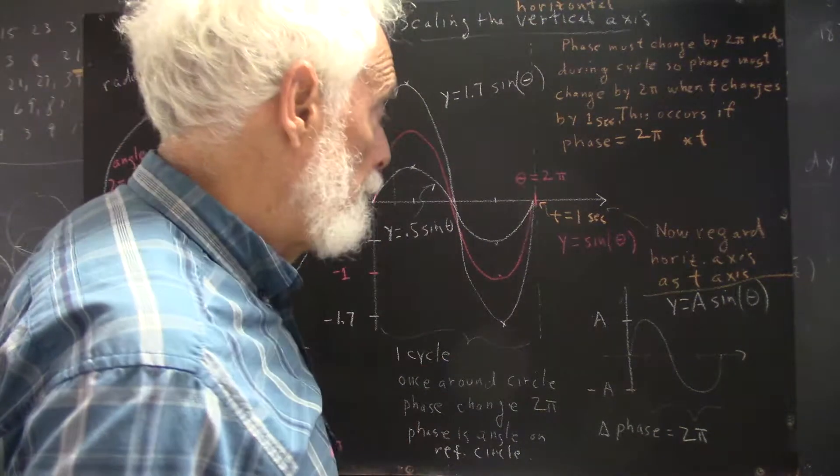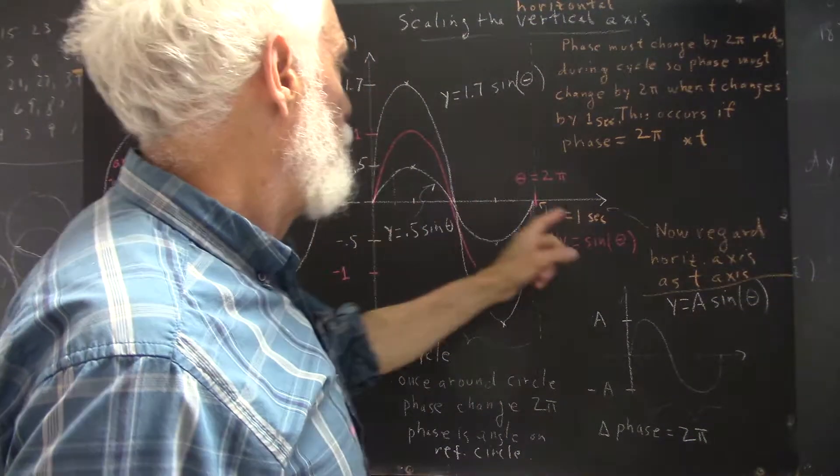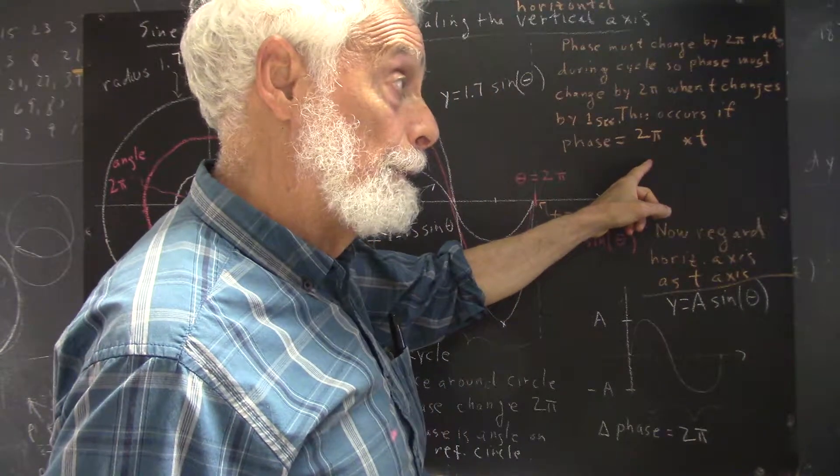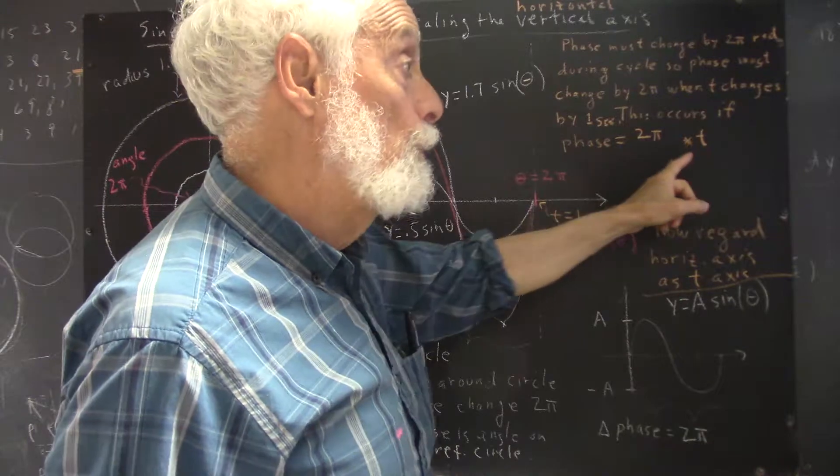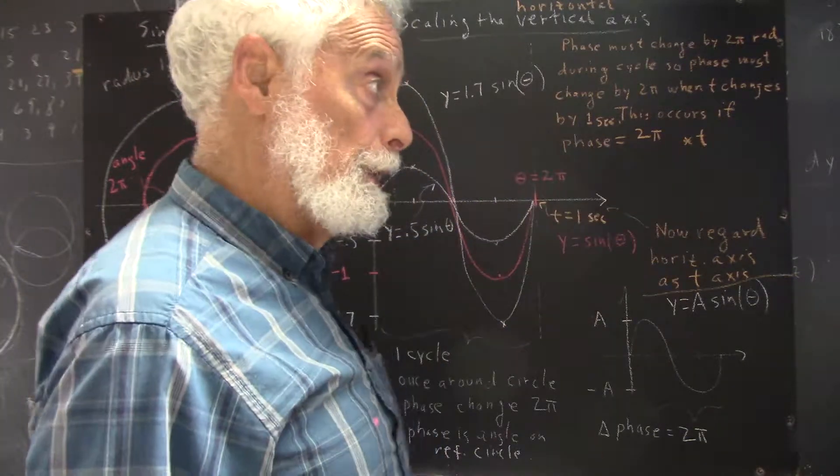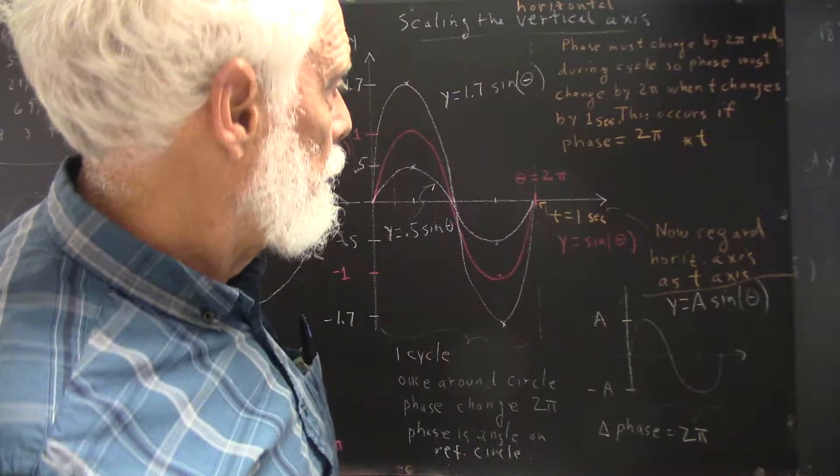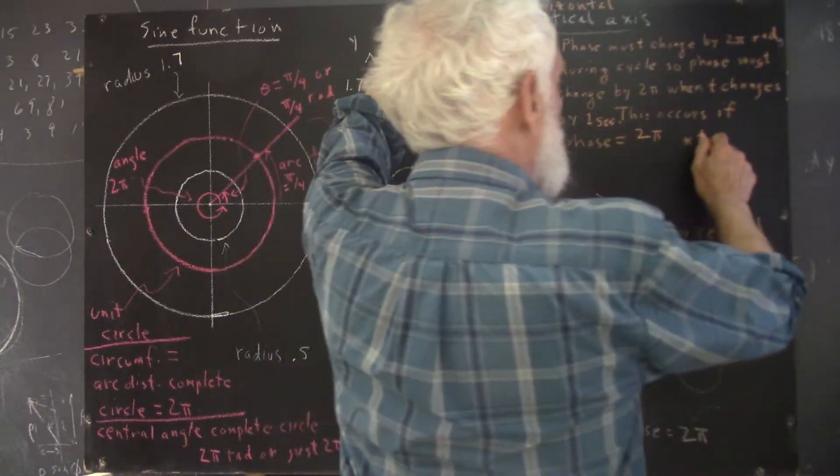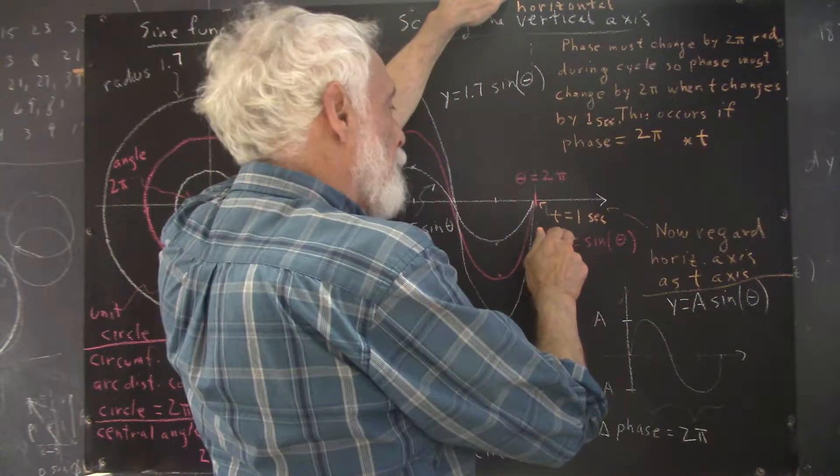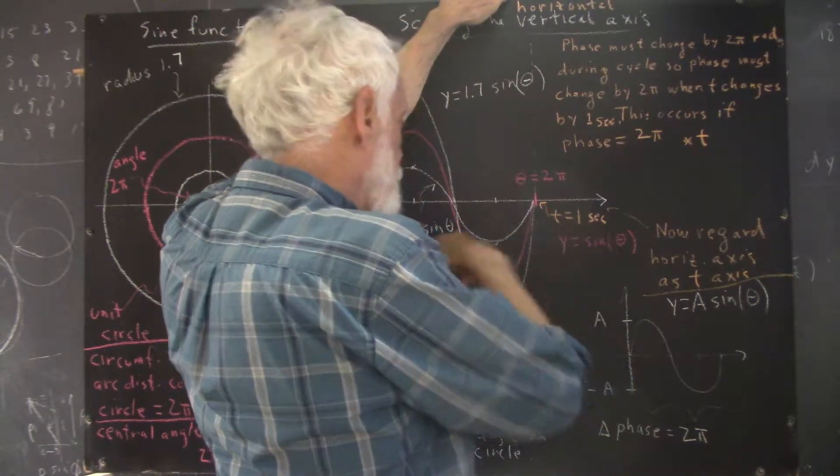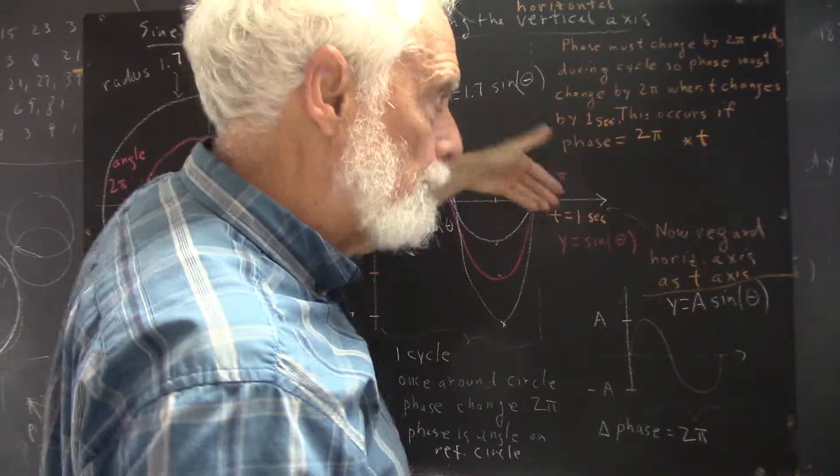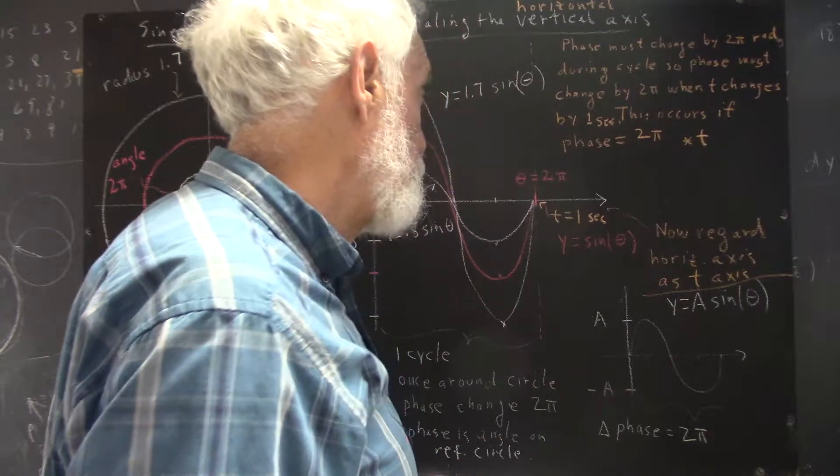First of all, understand that if t changes by 1 second, then 2π times t is going to change by 2π. That's exactly what we want - we want the phase to change by 2π as we complete a cycle. Now I want to put units into this that will match up with the units we've specified for t, so that when t equals 1 second, we've completed the complete cycle with a phase of 2π radians.